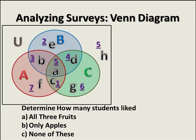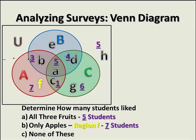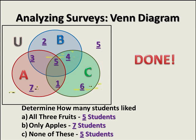We now have all cardinalities labeled and can answer the questions. Part A: how many like all three fruits? That's region a — 5 students. Part B: how many like only apples? That's region F — 7 students. Part C: how many like none of these? That's region H — 5 students. So we've completed our survey question.